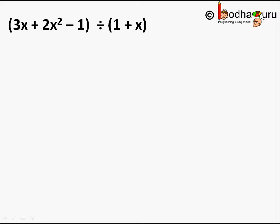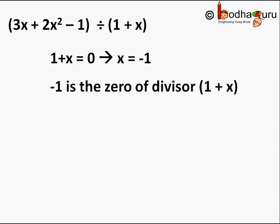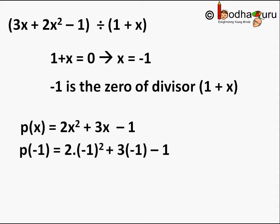Let us take an example. Find the remainder of dividing the polynomial 2x² + 3x - 1 by 1 + x, without performing the division operation. First, find the zero of the divisor: 1 + x = 0, so x = -1. Now put this value in the dividend: p(-1) = 2(-1)² + 3(-1) - 1 = 2 - 3 - 1 = -2. So the remainder is -2.